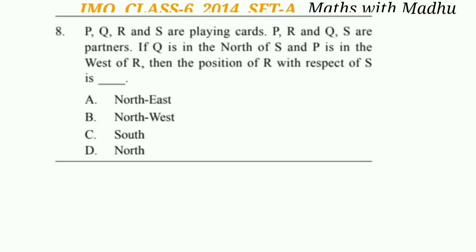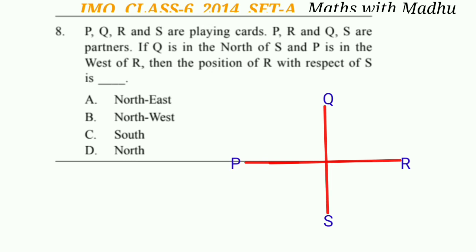Question 8: P, Q, R and S are playing cards. P-R and Q-S are partners. Q is to the north of S, and P is to the west of R. Based on the figure, the position of R with respect to S is north-east. The correct answer is option A.